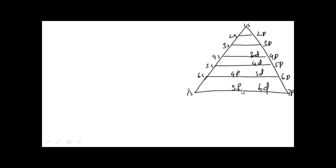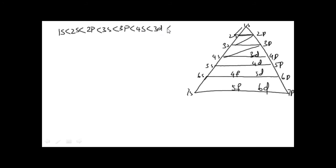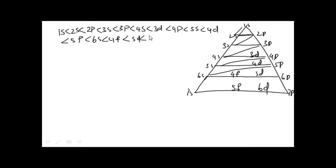The increasing order of energy level is: 1s < 2s < 2p < 3s < 3p, then 4s, then 3d, then 4p, then 5s, then 4d, then 5p, then 6s, then 4f, then 5d, then 6p, then 7s, then 5f, then 6d, then 7p. This is the increasing order of energy level.